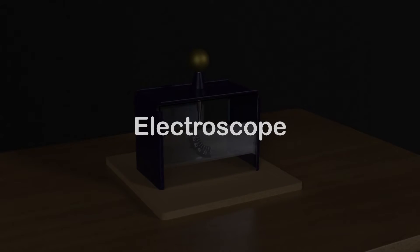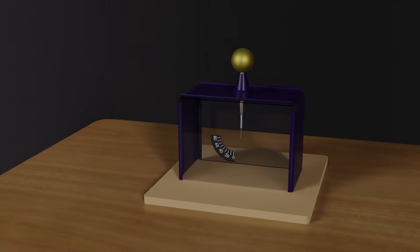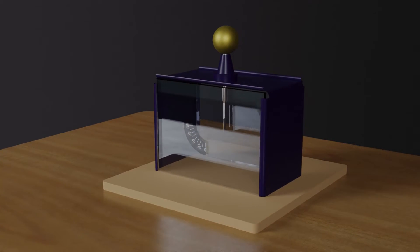The device you are seeing right now is an electroscope, which was discovered in the 18th century and is used to measure the presence of charge on any body.